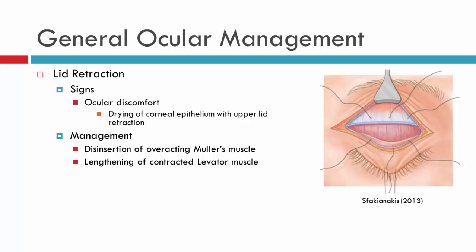In relation to lid retraction, where this could be causing corneal epithelium drying, there is the option of surgical intervention. A disinsertion of the overacting Müller's muscle or a lengthening of the contracted levator muscle can also assist these patients in relation to their cornea.